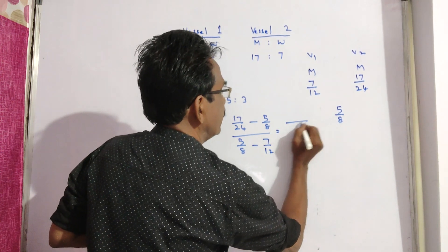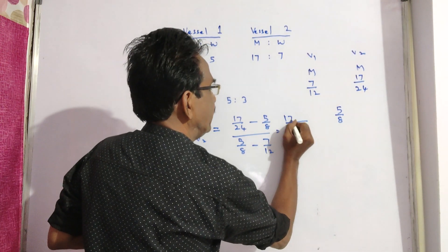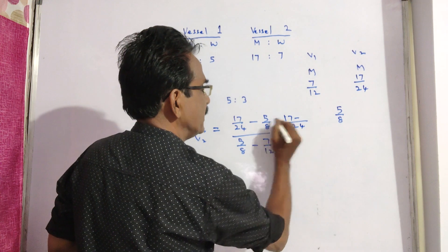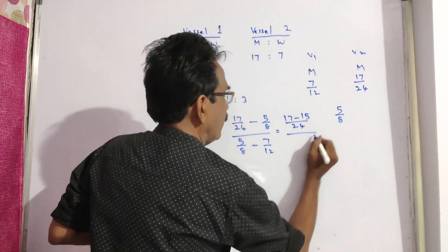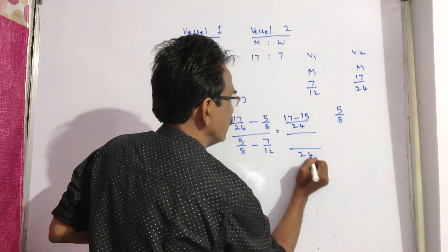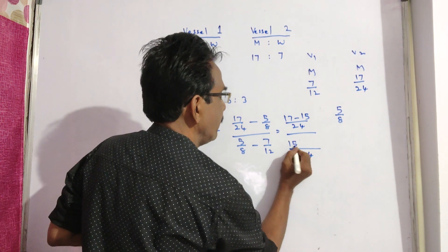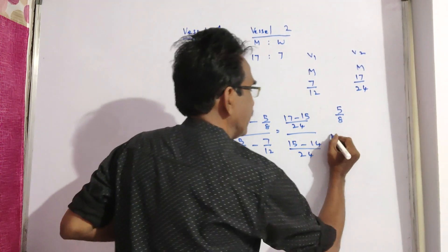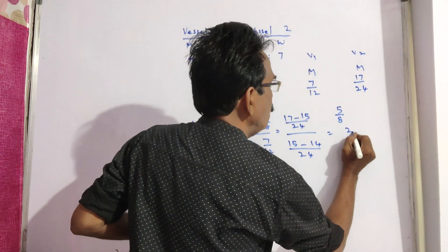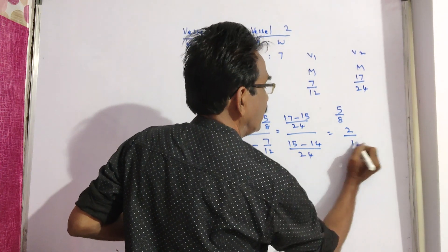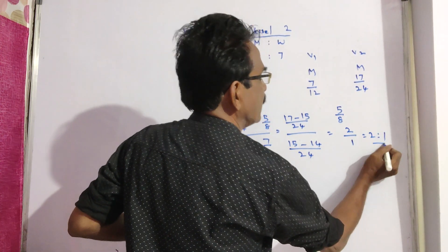See friends, here the LCM is 24. 17 minus 15 gives us 2. 5 times 3 equals 15. Here also the LCM is 24. 15 minus 14 equals 1. So 2 upon 1, that is equal to 2 is to 1 is your answer.